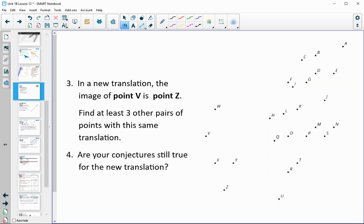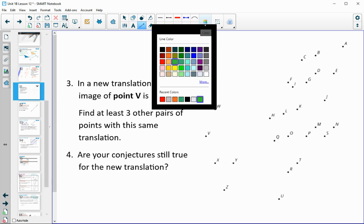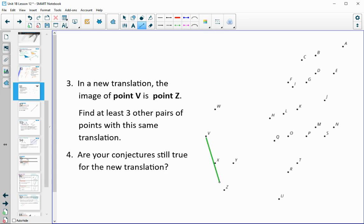So now I want you to use your other color. There's a new translation that's going to take point V to point Z. So I want you to connect that like you did in the last one. Connect point V to point Z and draw an arrow going towards Z. Then I want you to try to find other translations, other points that used the same translation, just like you did on the last one. So pause the video, find at least three examples of this translation elsewhere in the diagram.